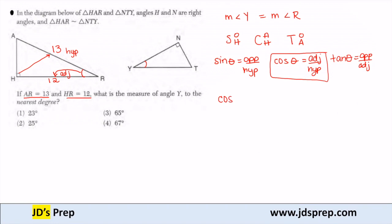So cosine of our angle, which is angle R, is the adjacent side, which is 12, over the hypotenuse, which is 13.